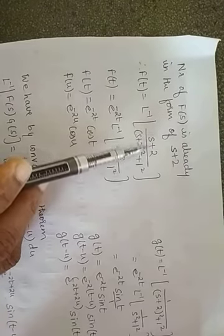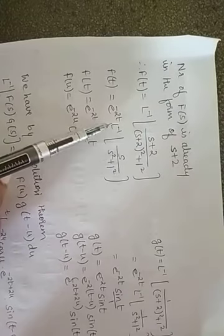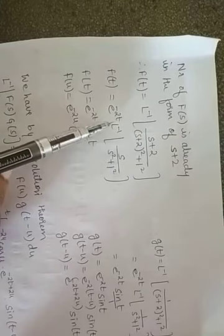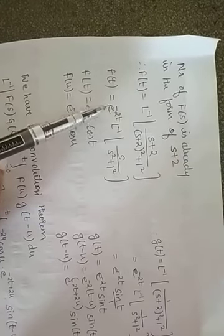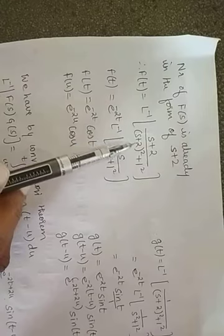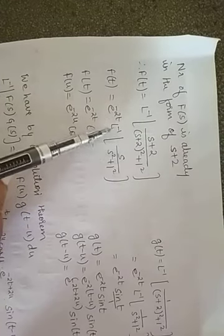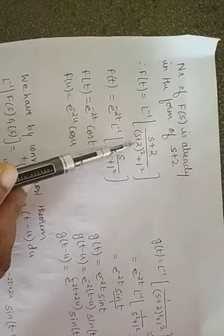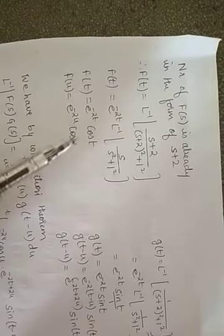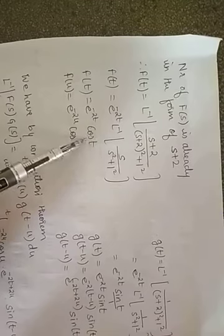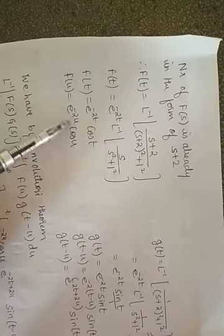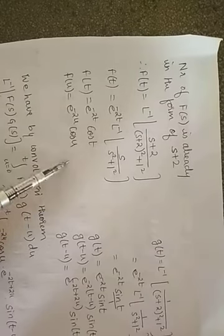We find f(t) = L⁻¹{(s+2)/((s+2)²+1²)}. Applying the first shifting property — e^(at) · L⁻¹{s/(s²+1)} = e^(at)·cos(t) — we get f(t) = e^(−2t)·cos(t). Therefore f(u) = e^(−2u)·cos(u).